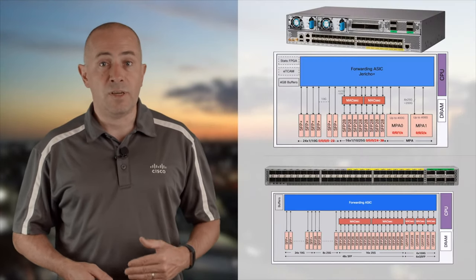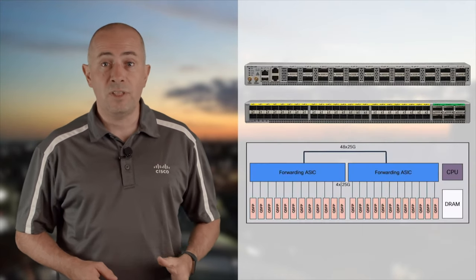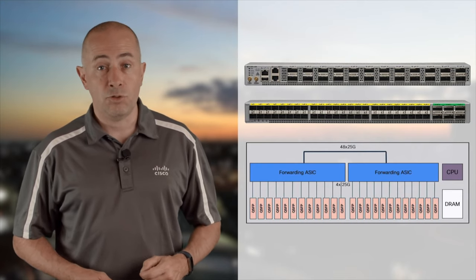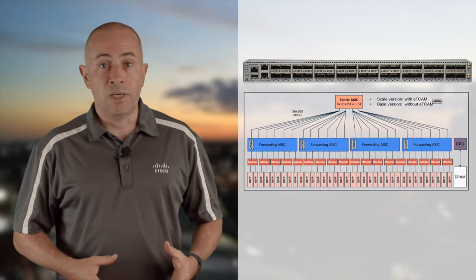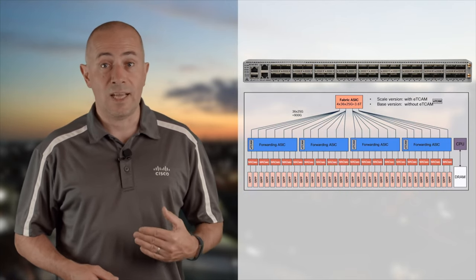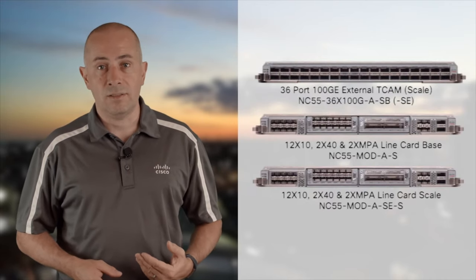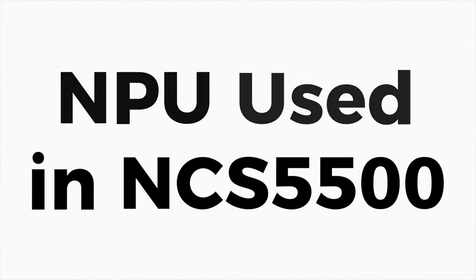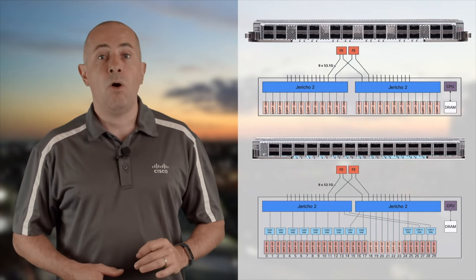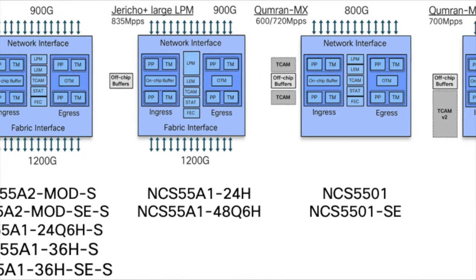Jericho Plus in standalone mode is used in the 55A2-Mode fixed systems and the 55A2-24Q-6H-S. In back-to-back mode, it's in the 55A1-24H and 55A1-48Q-6H with large LPM. In Leaf and Spine mode interconnected with FE3600, it's in the 55A1-36H-S or non-S, the 36x100G SC line cards, and the modular line cards. Jericho 2 is only used today in the 400G line cards, interconnected through a new generation of fabric engines named FE9600 or Ramon. Check the blog post on xrdocs.io for a summary chart.